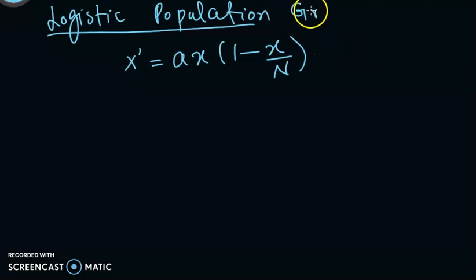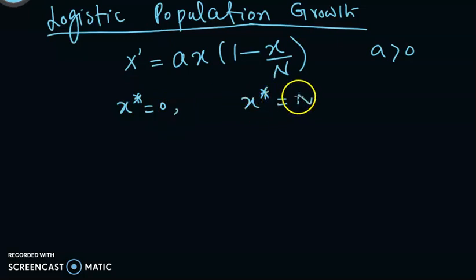For population growth, if it is growth then a > 0, and in this case we have seen that x* = 0 and x* = N are two equilibrium solutions.